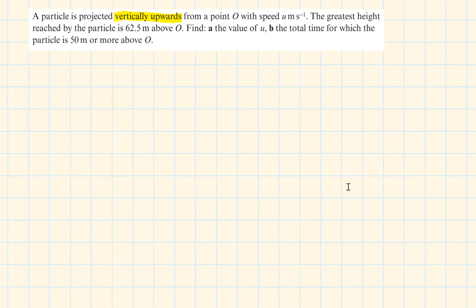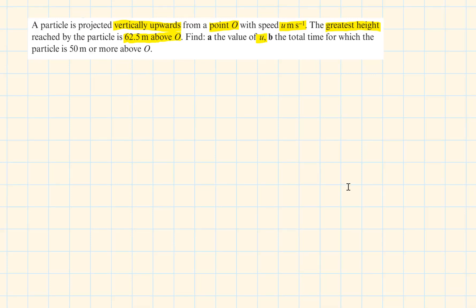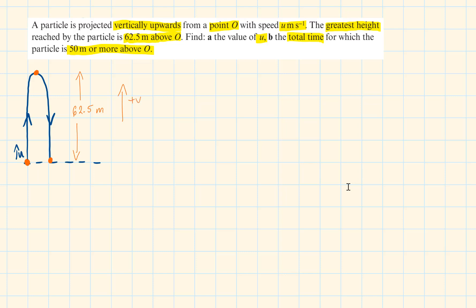A particle is projected vertically upwards from point O with speed U metres per second. The greatest height reached by the particle is 62.5 metres above O. We need to find the value of U and the total time for which the particle is 50 metres or more above O. Drawing a lead diagram, starting at O we label the initial velocity as U and take the positive direction as upwards. The greatest height of 62.5 metres is the turning point where velocity equals zero. The acceleration due to gravity is minus 9.8 since positive direction is upwards.